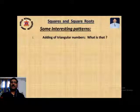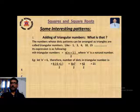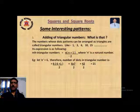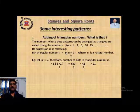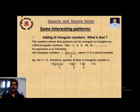Now some interesting patterns — adding triangular numbers. Numbers whose dot patterns can be arranged as a triangle are called triangular numbers. Examples are: 1, 3, 6, 10, 15, 21, and so on. The general expression for triangular numbers is n(n+1)/2, where n is a natural number. For example, if n = 1: 1×2/2 = 1; if n = 2: 2×3/2 = 3; if n = 6: 6×7/2 = 21.